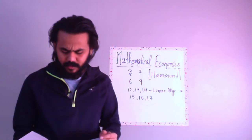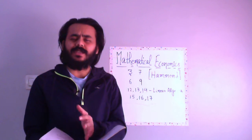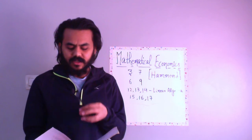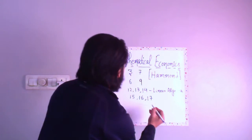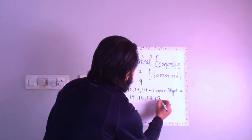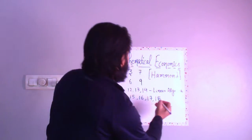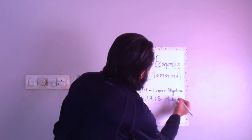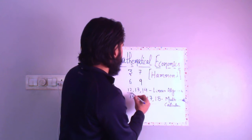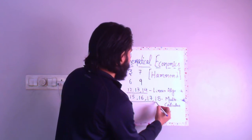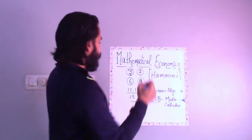Next is constraint optimization in chapter eighteen, which is used a lot in utility maximization problems. Eighteen is also very specifically important for economics. Your chapters 15, 16, 17, and 18 can be clubbed together as multivariate calculus. This was linear algebra and this was multivariable calculus. And these were ad hoc chapters 3, 6, 7, and 9.